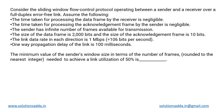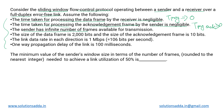This is a question from the data link layer. A sliding window flow control mechanism is operating between a sender and a receiver over a full duplex error-free link. We assume that the time taken for processing the data frame by the receiver is negligible, the propagation delay is negligible, the acknowledgement delay is also zero, and the sender has an infinite number of frames available for transmission.